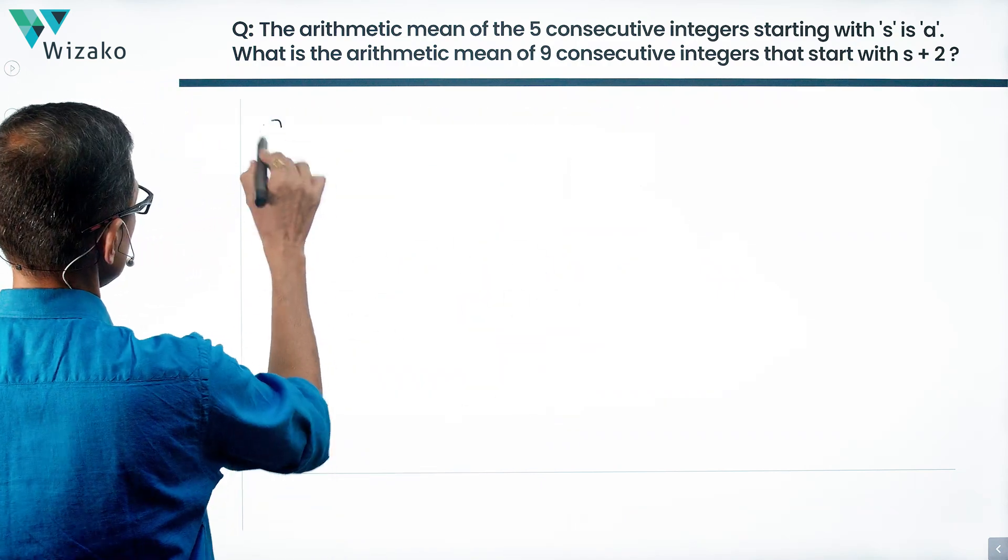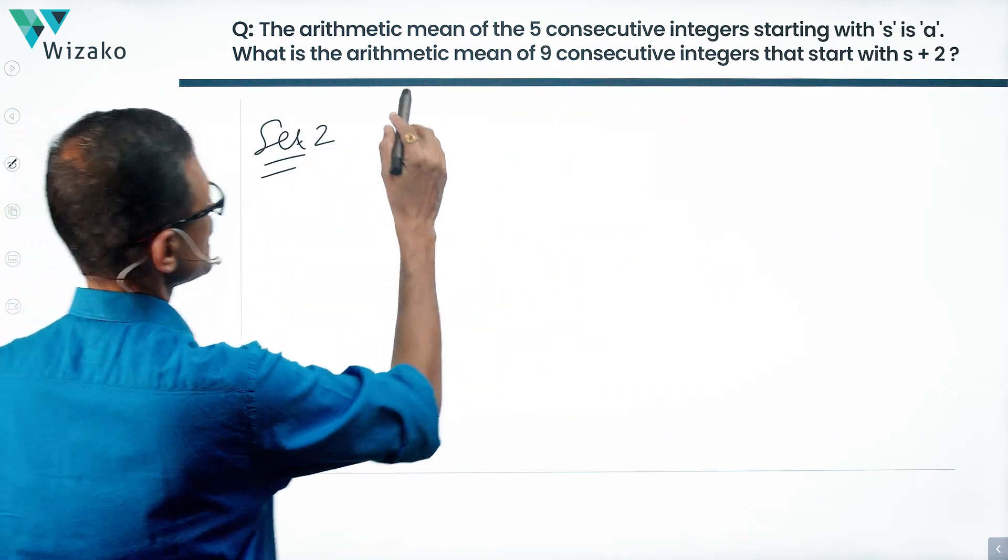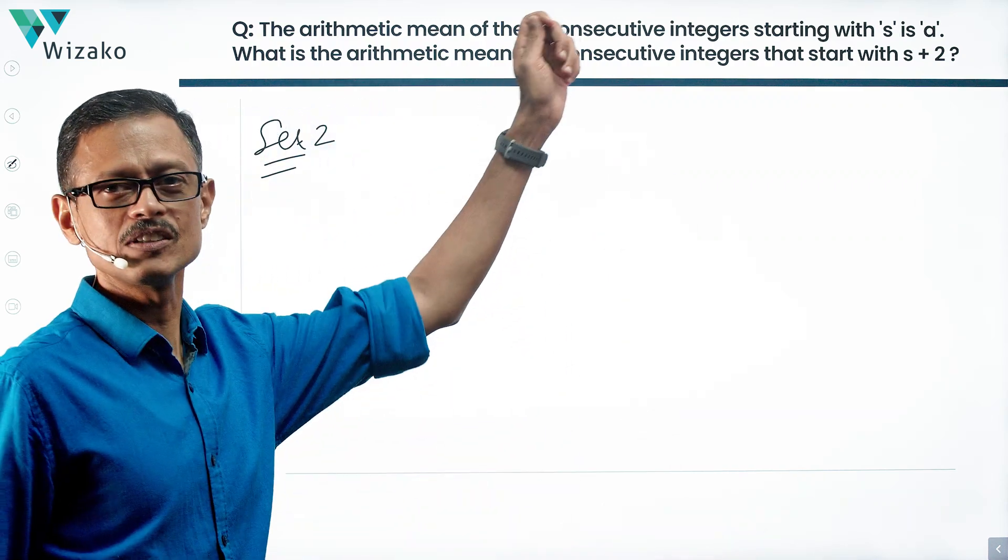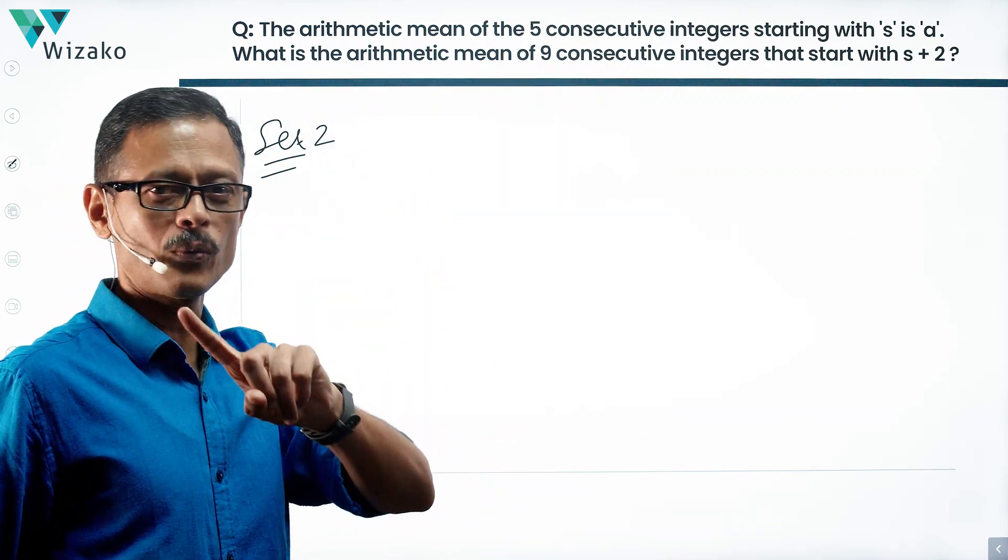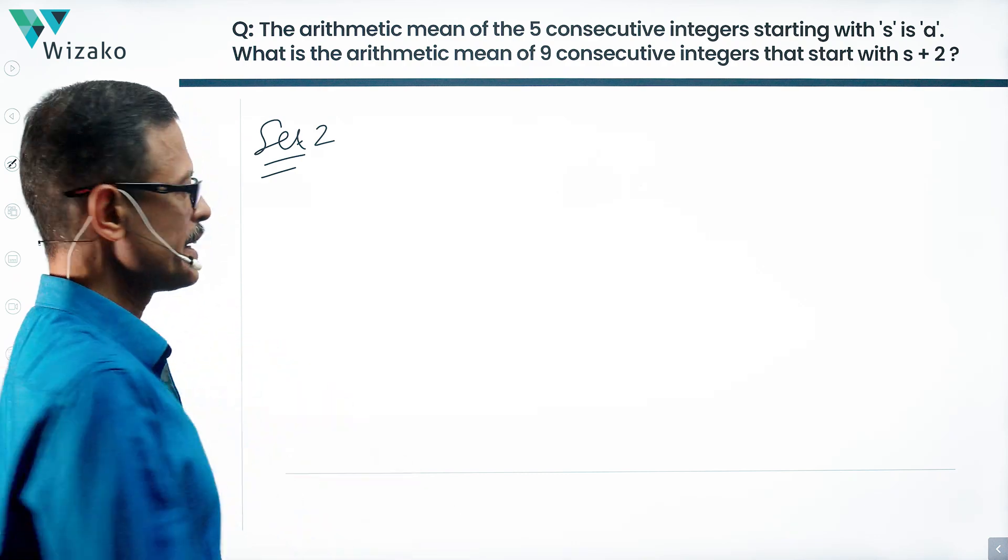What does set 2 tell us? Set 2, we're going to look at 9 consecutive integers starting with S plus 2. We assumed S to be 1, therefore S plus 2 is going to be 3.